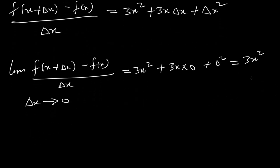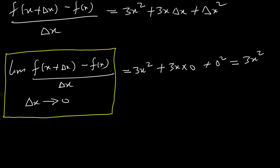The last step is to take the limit as dx tends to 0. Taking the limit, wherever we see dx we replace it with 0: 3x² + 3x(0) + 0² = 3x². So we can say the derivative of f(x) = x³ is f'(x) = 3x². This is how we find the derivative of a function using first principles.